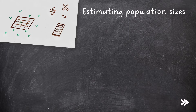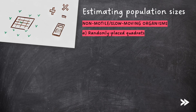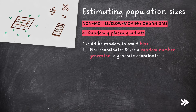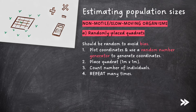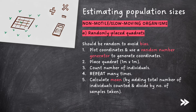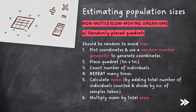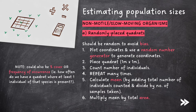Next, we need to know how we can estimate population sizes. Methods vary depending on whether the organisms are non-motile or slow-moving, or motile. For non-motile or slow-moving organisms, we can use randomly placed quadrats — these should be random to avoid bias. We plot coordinates using a random number generator, place a 1m × 1m quadrat, and count the number of individuals. We repeat this many times, then calculate the mean number of individuals per metre squared by dividing the total count by the number of samples, and multiply by the total area to estimate the population size. Note that you could also measure percentage cover or frequency of occurrence.